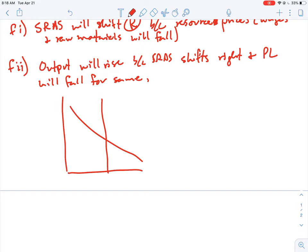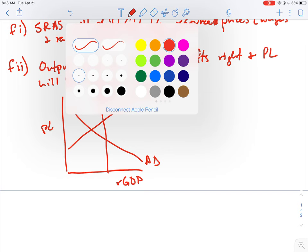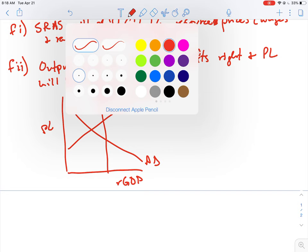So we've got the same recessionary gap that we were talking about before. SRAS, AD, LRAS here, PL, real GDP. Okay, so now we're going to switch colors. And basically, if you do nothing, then SRAS will shift to the right, which means that price level will fall and output will rise. So that's the classical way that a recession works itself out. Thank you very much. Nice cumulative FRQ. Take care, guys.